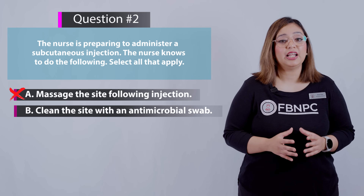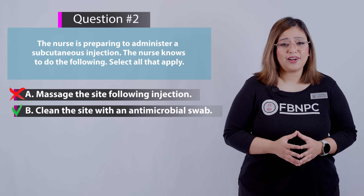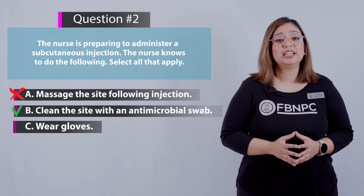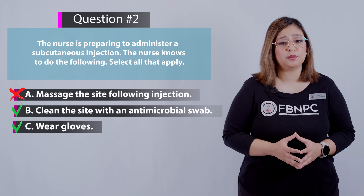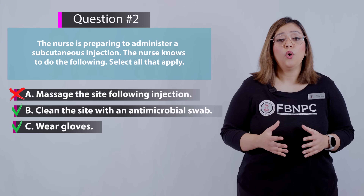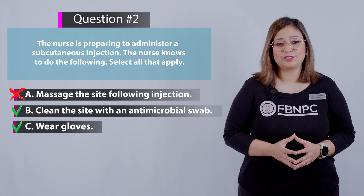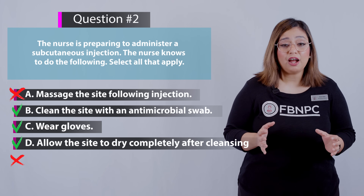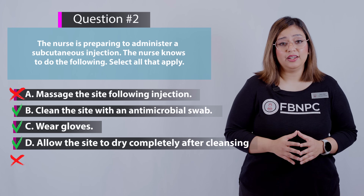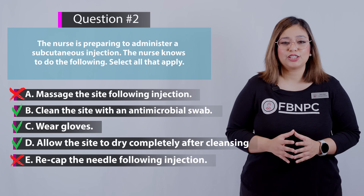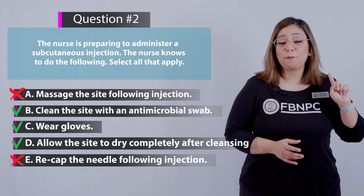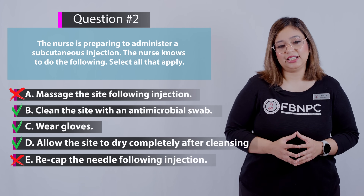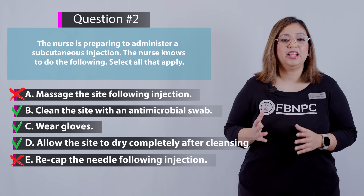Option B — clean the site with an antimicrobial swab — is correct because the injection site should be cleansed prior to administering the injection. Option C — wear gloves — is also true; the nurse must wear gloves during a subcutaneous injection because there is a risk of bleeding and contact with bodily fluids. Option D — allow the site to dry completely after cleaning — is also true; you must wait until the alcohol or antimicrobial agent is air dry before administering the injection. Option E — recap the needle following injection — is incorrect because recapping is not allowed; we must prevent needle stick injuries. Therefore, options B, C, and D are the correct answers.